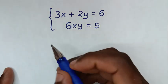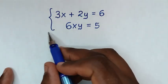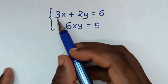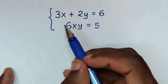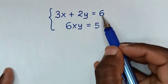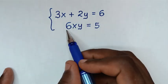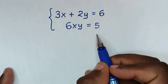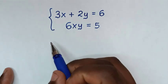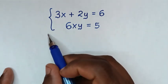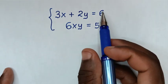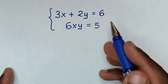Hello, you are welcome to solve this math problem which is 3x plus 2y is equal to 6, and 6xy is equal to 5 — to find the values of x and y from these two systems of equations.